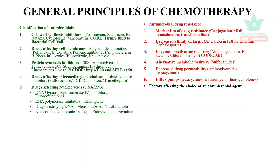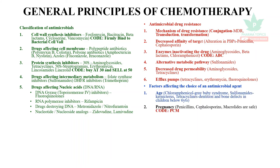Antimicrobial drug resistance is a main exam question. Factors affecting the choice of antimicrobial agent. One is age — Chloramphenicol causes gray baby syndrome; Sulfonamides cause kernicterus, that is jaundice; Tetracyclines affect bone and teeth growth, so they cannot be used. Next, pregnancy — what is safe? Penicillins, Cephalosporins, Macrolides — PCM code.